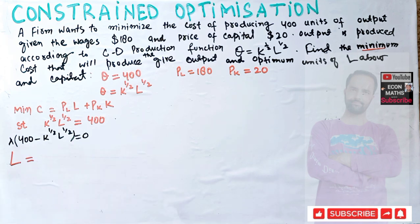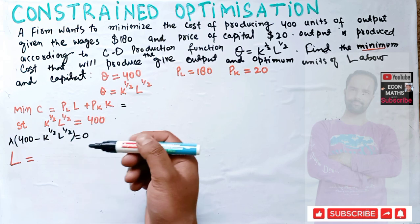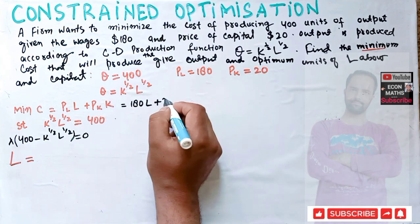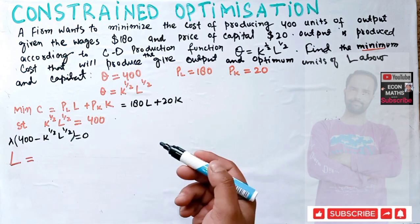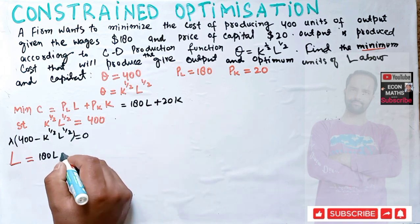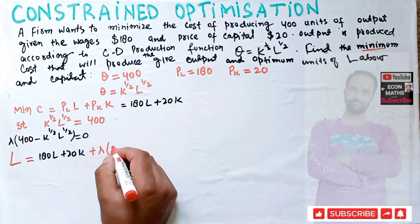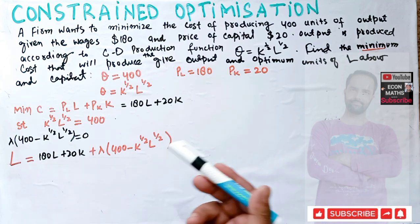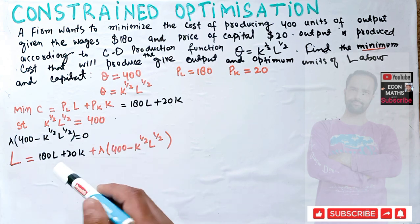The Lagrangian function is formed by adding the objective function and the resulting constraint. Our objective function is 180L + 20K. Adding the manipulated constraint, the Lagrangian becomes: ℒ = 180L + 20K + λ(400 - K^(1/2)·L^(1/2)). To find optimal values of labor and capital, we take partial derivatives with respect to L, K, and λ, and set them equal to zero simultaneously.